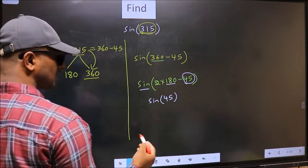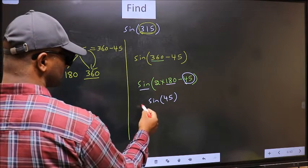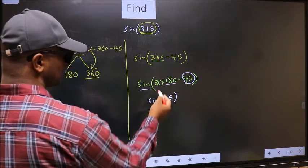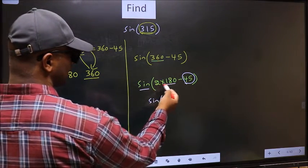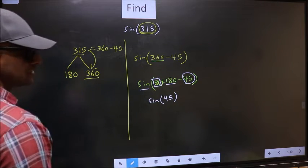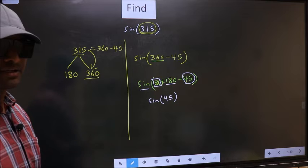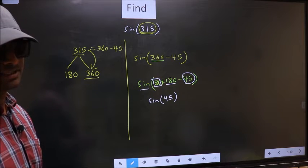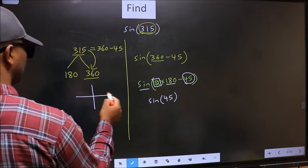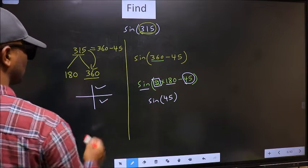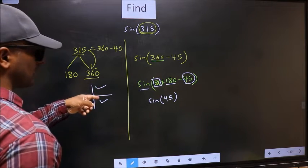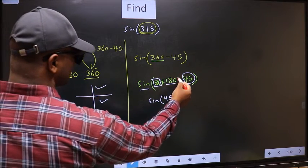Now the question is, will we get here plus or minus? To answer that, we should look at the number before 180. That is 2, and 2 is even. All the even multiples of 180 lie either in the first or in the fourth quadrant. So now to select the quadrant, we should look at this symbol.